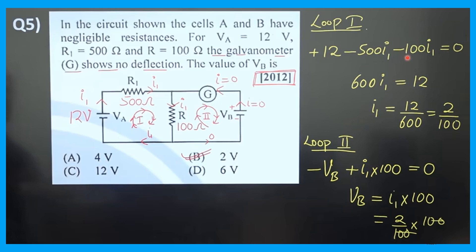500 plus 100 equals 600I. Moving the minus sign across gives 600I equals 12. Therefore I equals 12 divided by 600. Simplifying — cancelling common factors — gives I equals 2 divided by 100.